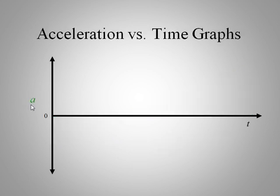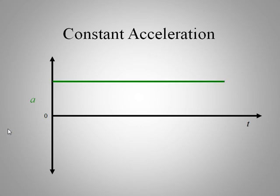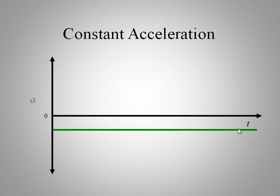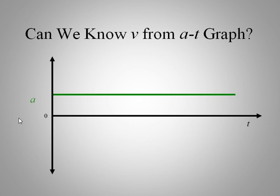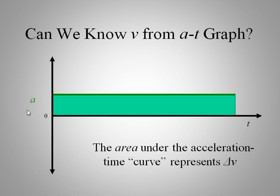Now let's look at acceleration-time graphs, with acceleration on the vertical axis. Zero acceleration is along the horizontal time axis. Constant acceleration is a horizontal line — this means velocity is increasing constantly. We could also have negative acceleration, such as the acceleration due to gravity if we define downward as negative. The area under an acceleration-time curve gives us the change in the object's velocity over that time period.